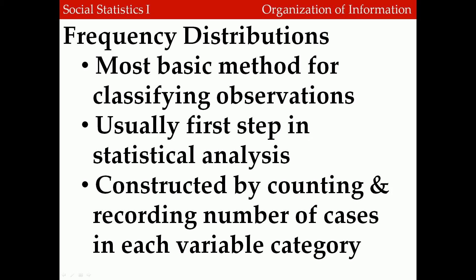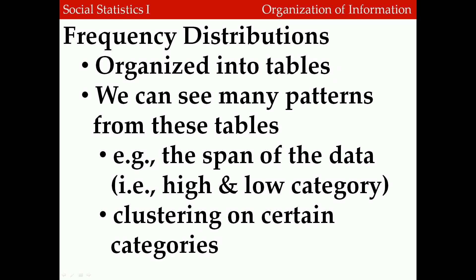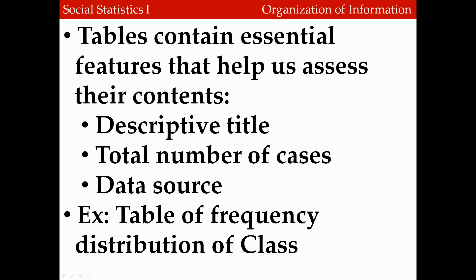Now that we know how to categorize variables according to variable categories, we can create something called frequencies, organized into a frequency distribution. A frequency distribution is the most basic method of classifying observations and is usually the first step in statistical analysis. It is constructed by counting and recording the number of cases in each variable category, usually organized into tables. This allows us to see patterns in the data — such as the high and low categories, or clustering on certain categories. In order for the information in a table to be easily readable, tables contain certain essential features: a descriptive title, a total number of cases, and a data source.